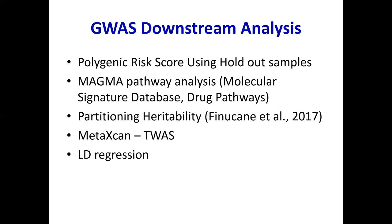Thank you, Todd. There was downstream analysis planned to further understand the biology underpinning the GWAS loci from the MTAG analysis. These included polygenic risk modeling using holdout samples from our original COGENT cohort, pathway analysis using MAGMA, partitioned heritability analysis to examine differential cell type expression and epigenomic marks, transcriptomic-wide analysis integrating eQTL profiles with GWAS summary statistics, and genetic correlations with multiple traits potentially related to cognition.